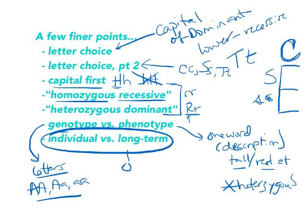Finally, the idea of individual versus long-term outcomes. When we look at a single Punnett square, we can interpret it two ways: any one of those possibilities could be the next offspring born, or — like Mendel did — we can say this gives us the overall ratios we'd see in a large population. For example, if we breed many heterozygous plants together, we'd see 25% recessive overall. So we can interpret it as either individual probability or as a long-term population prediction.